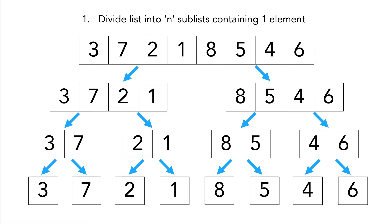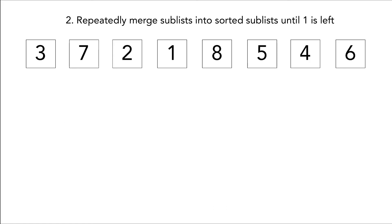Alright so now we have our eight single item arrays. Let's take a look at the next step. Repeatedly merge sublists into sorted sublists until one is left. So now that we have eight arrays we're gonna merge them back into one big array except now we're gonna sort them.